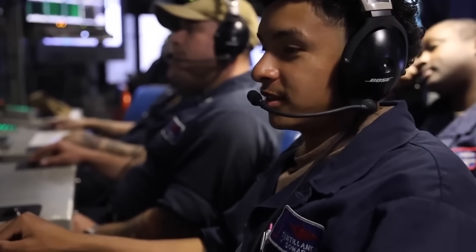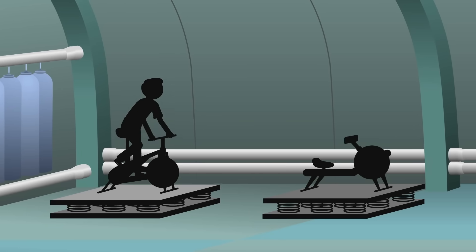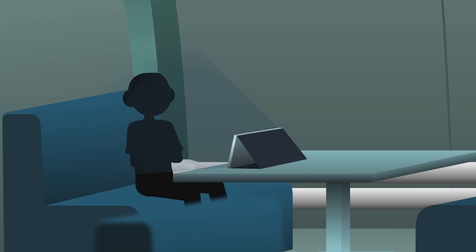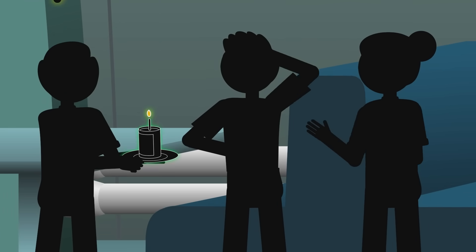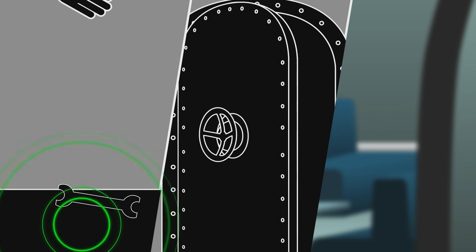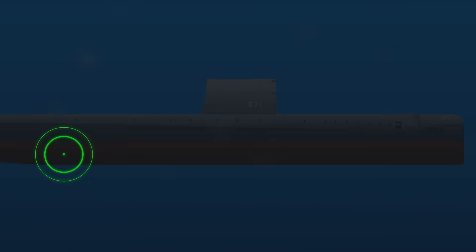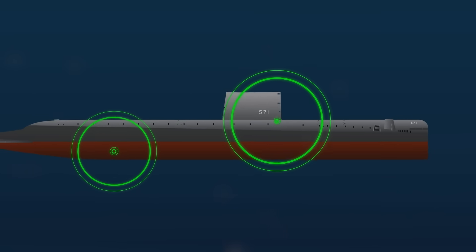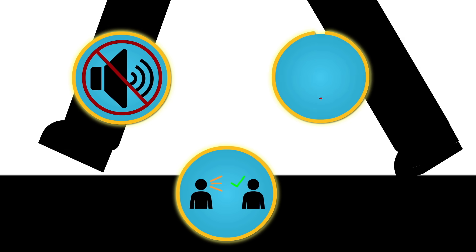To maintain alertness and morale, routines are everything. Exercise bikes and rowing machines are wedged into corners, mounted on special supports that reduce the noise. Movies play in the mess hall over headphones, birthdays are celebrated with canned cake and recycled jokes. And noise discipline is sacred. Every dropped wrench, every slammed hatch, every footstep on steel can echo into the ocean, where passive sonar may be listening. There's even an unspoken code. Move quietly, speak clearly, and always know where you are.